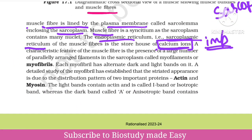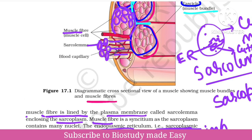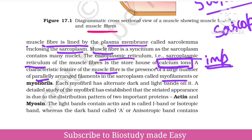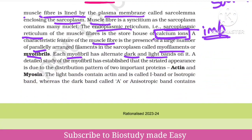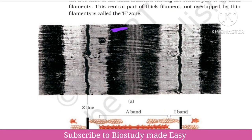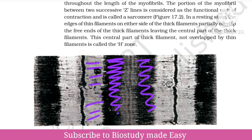Each myofibril has dark and light bands alternating. These bands appear because of two important proteins: actin and myosin. This is the dark band and this is the light band — alternating dark and light — because of the filaments actin and myosin.